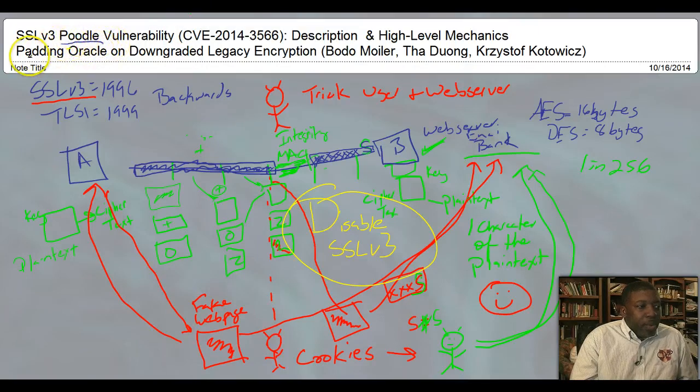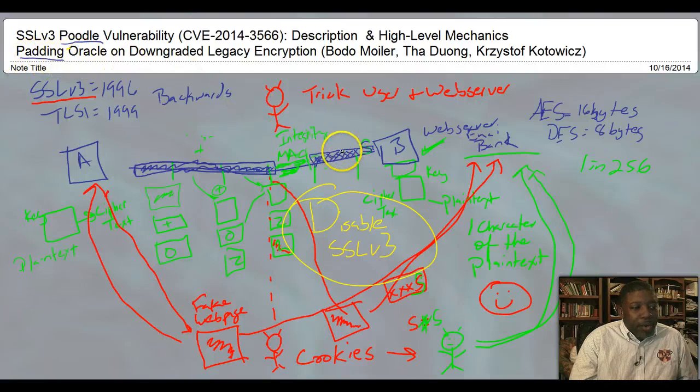The P in Poodle stands for padding. The padding is the first thing that the attacker uses, the size, in order to decrypt the file.